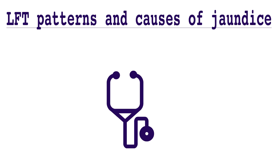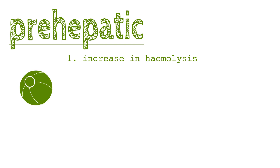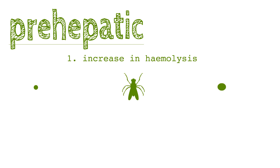LFT patterns and causes of jaundice. Prehepatic jaundice can be caused by an increase in hemolysis. This can be due to an acquired or hereditary hemolytic anemia, malaria, or genetic causes such as sickle cell anemia, thalassemia, or G6P dehydrogenase deficiency.